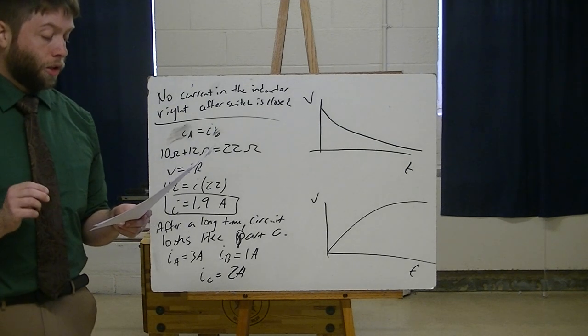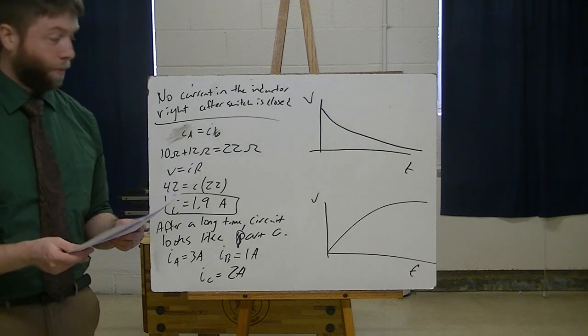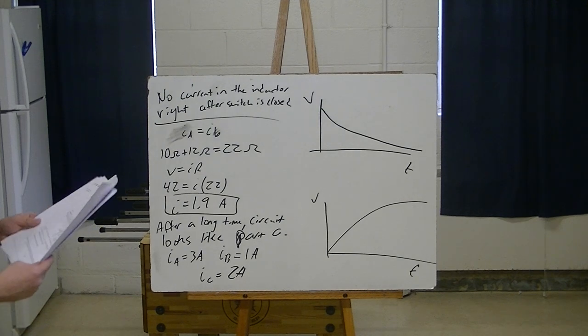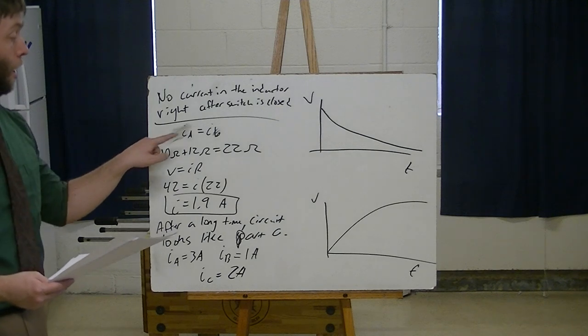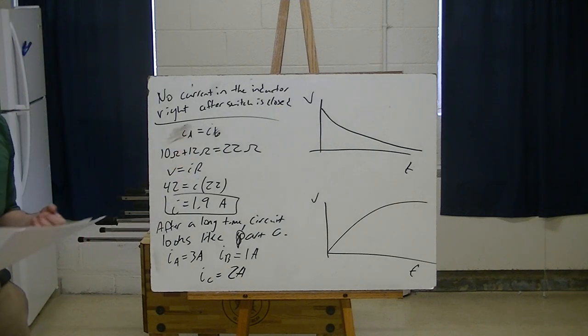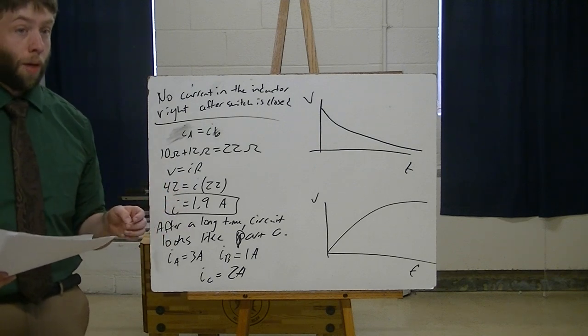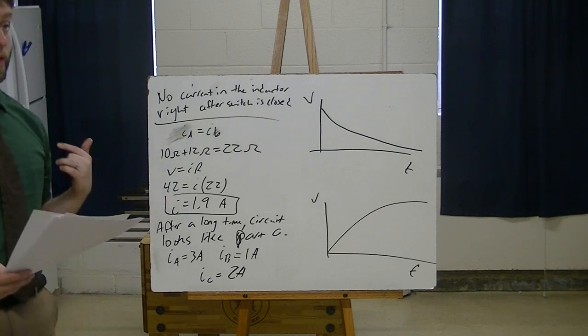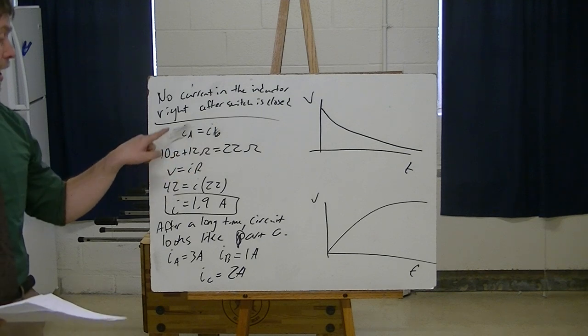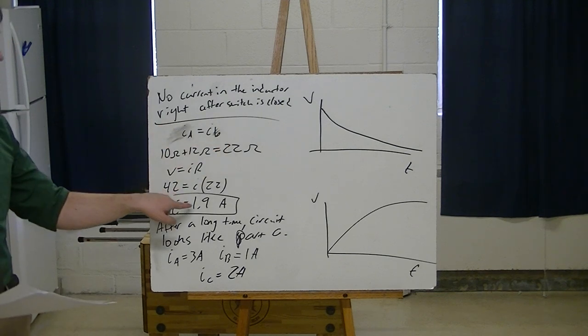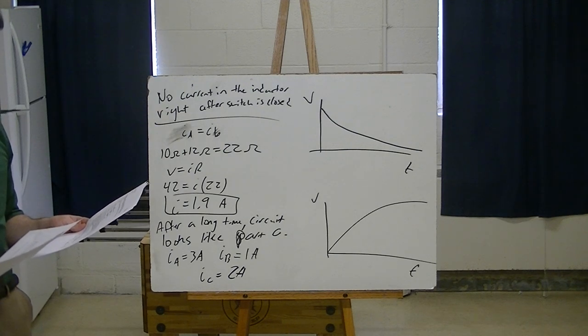So with no current through that inductor, what you're looking at right now is you're looking at just the 10 ohm resistor and the 12 ohm resistor in series. So that means Ia is going to be equal to Ib. That's because there's no current flowing through Ic through the inductor at the start of the problem. It's going to build up current as it goes. So those two resistors are in series, 10 ohm and 12 ohm. That makes 22. Use V equals IR to figure out the current. So the current for A and B is 1.9. And the current for C is going to be zero.